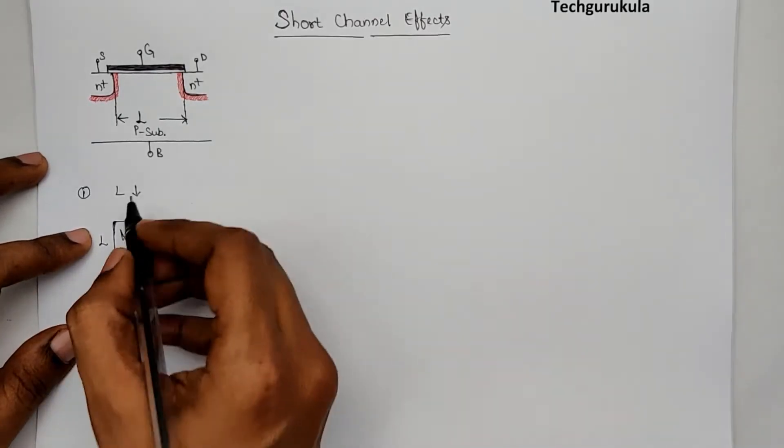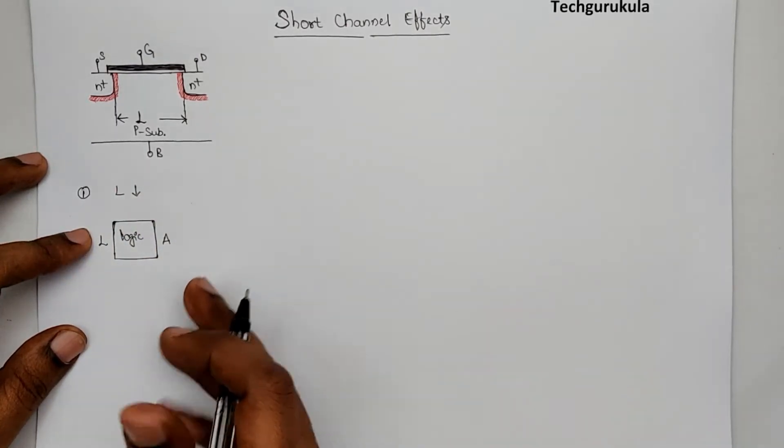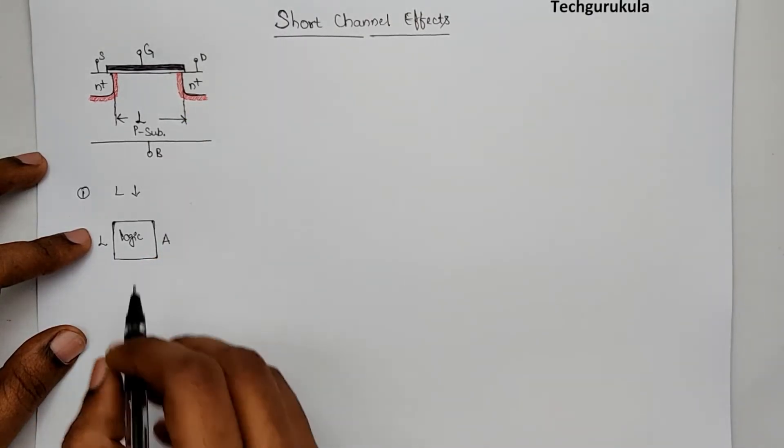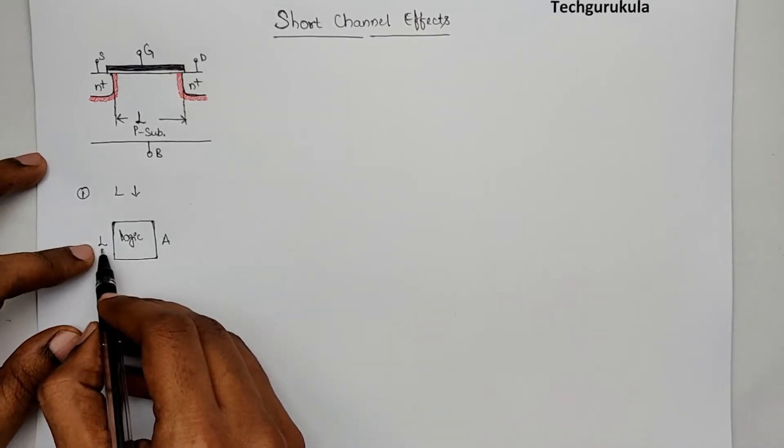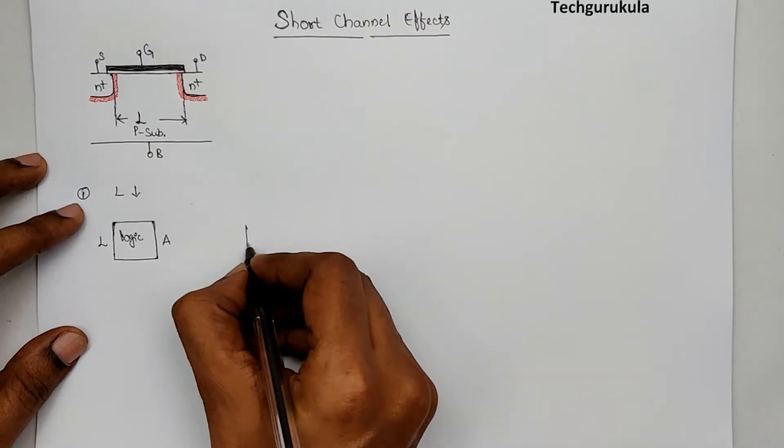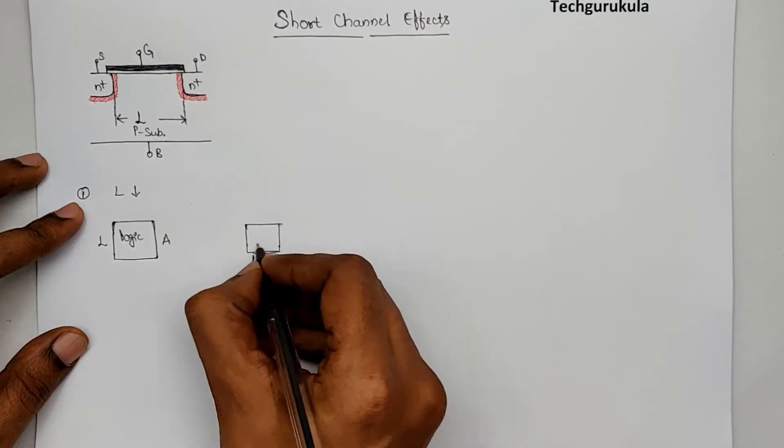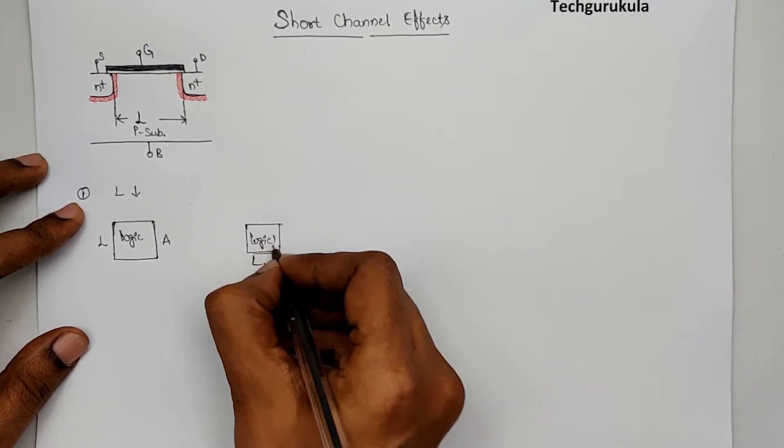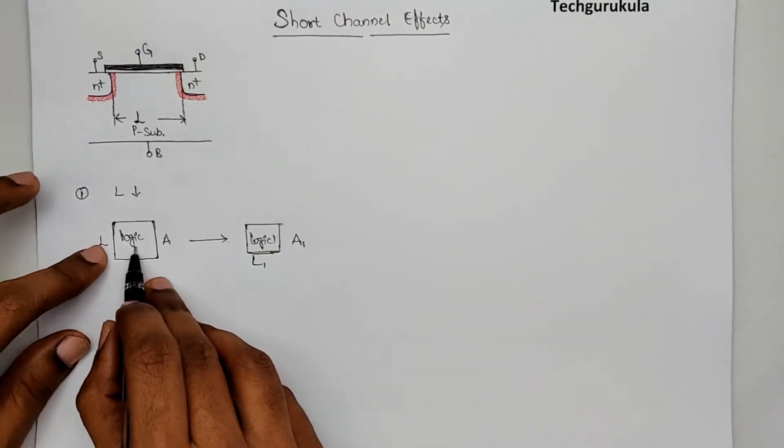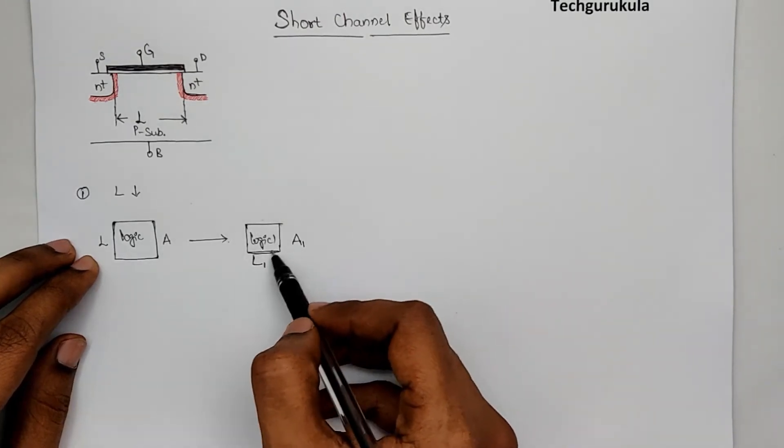And it takes an area A. If I reduce the channel length and have a different technology node, the MOSFET area taken would be less. Which means if I implement the same logic with a channel length reduced to L1, that particular technology node can implement the same logic in a smaller area A1. The same logic, if implemented with smaller channel length MOSFETs, would take smaller area for the same logic.